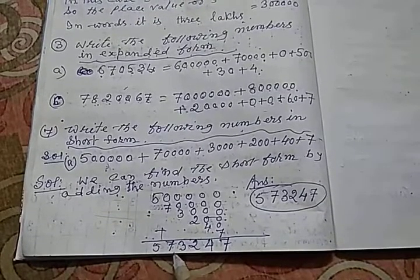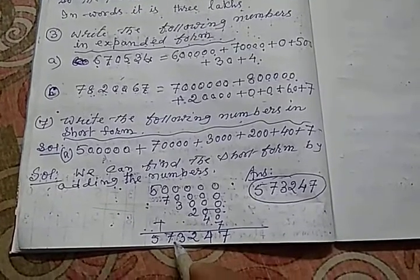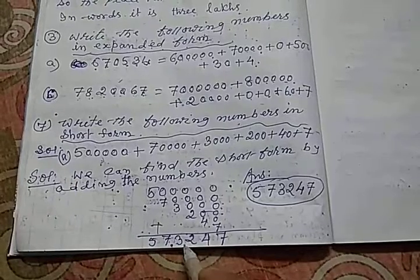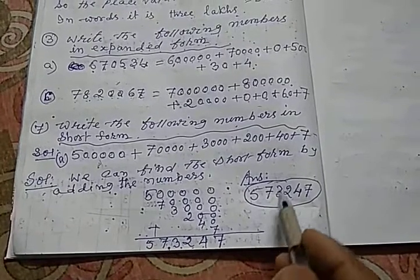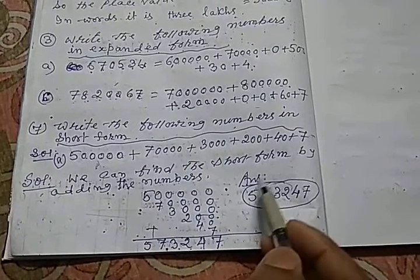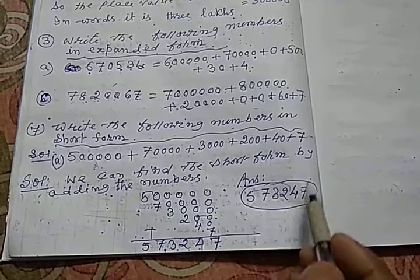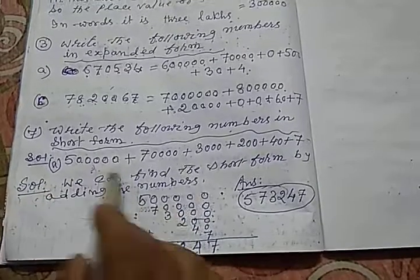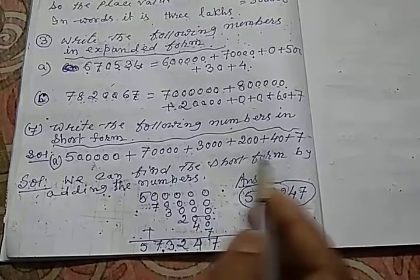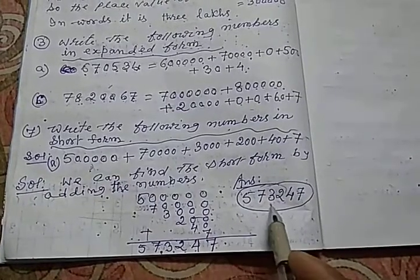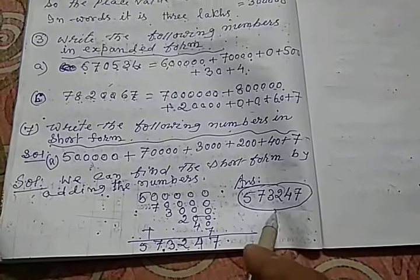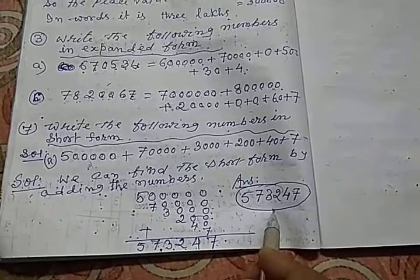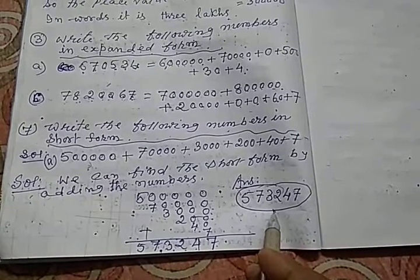We have the number 5700000 plus 7000000 plus 300000 plus 32000 plus 247. This is the numbers in short form. That means, ye expanded form mein tha, usko add kar liya, and add karne ke baad, ye ho gaya aapka number. Actual number is this. In the short form.